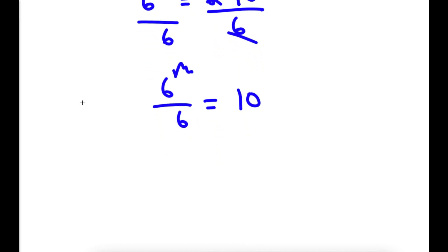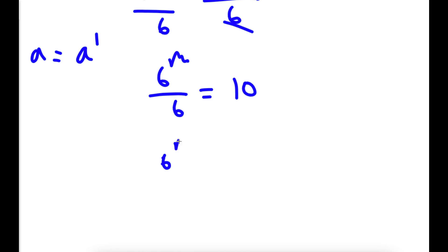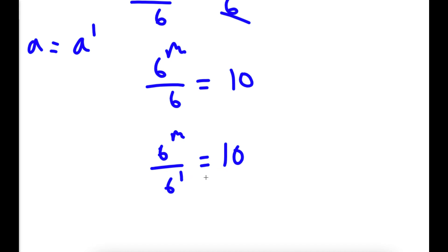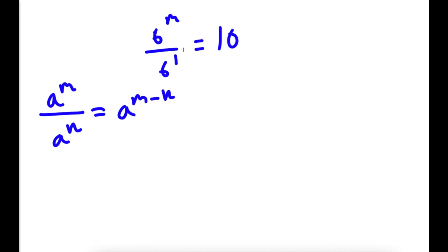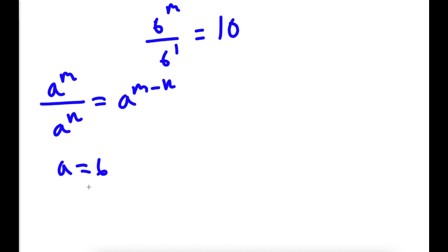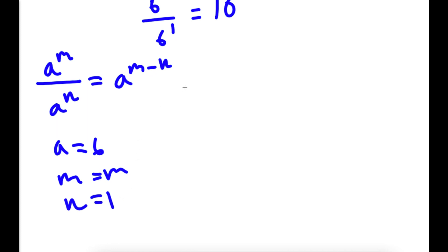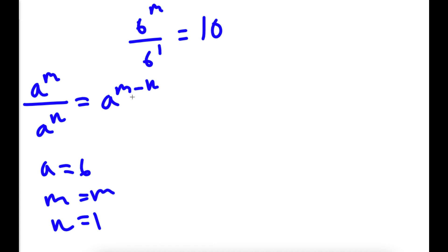Now 6, or any number, is the same thing as that number to the power of 1. So 6 is the same thing as 6 to the power of 1. So I have 6 to the power of m over 6 to the power of 1 is equal to 10. An important property of exponents is that if I have something in the form a to the power of m over a to the power of n, this is equal to a to the power of m minus n. So for 6 to the power of m over 6 to the power of 1, with a as 6, m as m, and n as 1, I get 6 to the power of m minus 1 is equal to 10.